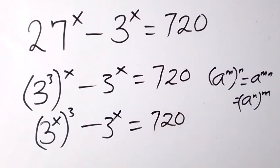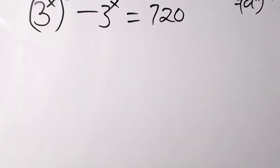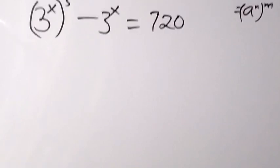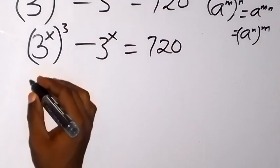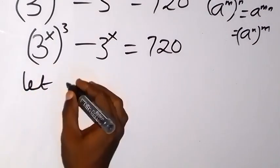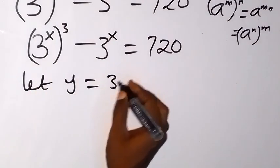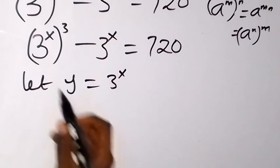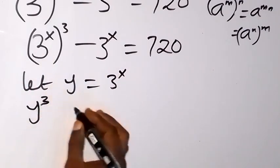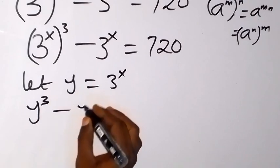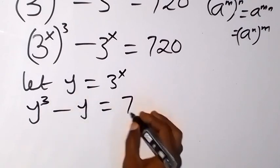From here we have 3 raised to power x common, so we can use a letter to represent that. Let y equal 3 raised to power x. Then we can rewrite this equation as y raised to power 3 minus y equals 720.